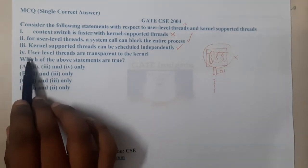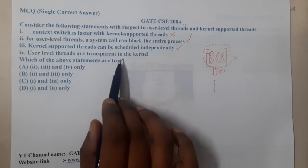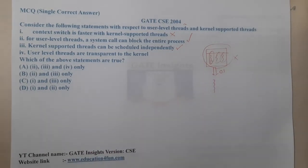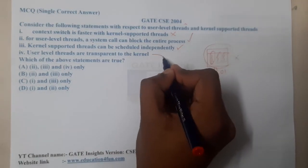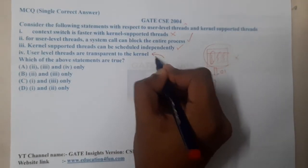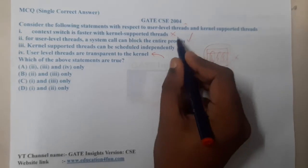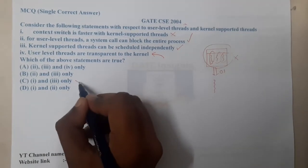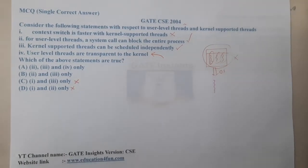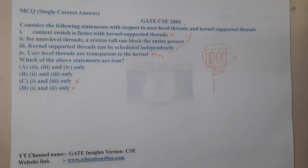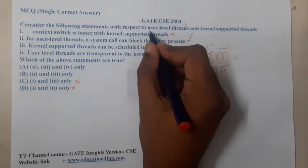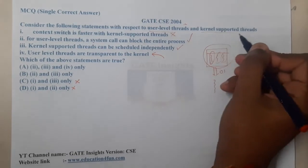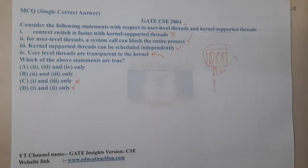Statement four says that user-level threads are transparent to the kernel. Most students get confused here. We can eliminate the options that say statement one is true, so options C and D are wrong. About 90% of students who have studied this concept will make it to this point, but this is where confusion typically arises.